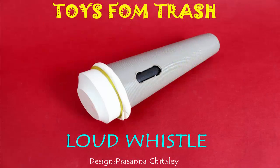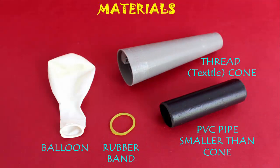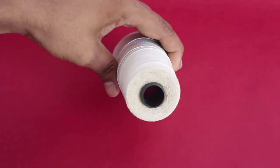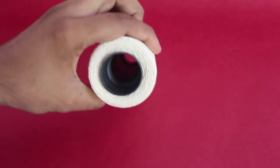As you blow in this musical toy it makes a very loud sound just like a trumpet. For making this you need a plastic cone, a piece of PVC pipe, a rubber band and a balloon.